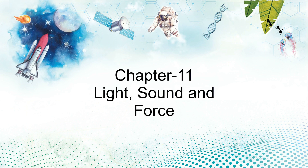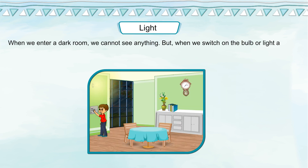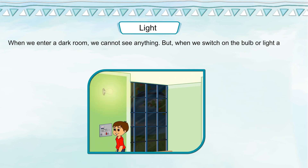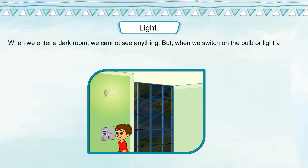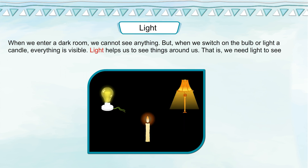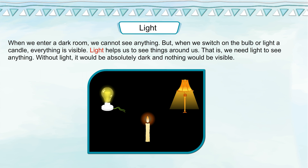Chapter 11: Light, Sound and Force. Light — when we enter a dark room, we cannot see anything. But when we switch on the bulb or light a candle, everything is visible. Light helps us to see things around us. That is, we need light to see anything. Without light, it would be absolutely dark and nothing would be visible.